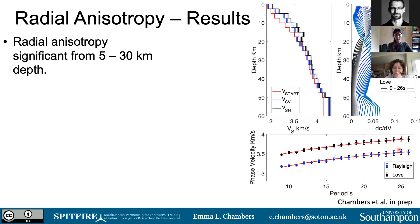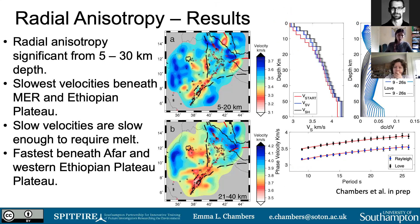Inverting for absolute shear velocity, we find that the vertical shear velocity on average is always weaker than the horizontally aligned radial shear velocity. This is significant for 5 to 30 kilometers depth, suggesting we require anisotropy at these depths. Showing the absolute shear wave velocity models — slow velocities are red — the slowest velocities are beneath the Main Ethiopian Rift and Ethiopian Plateau, averaged from 5 to 20 kilometers and 21 to 40 kilometers depth.